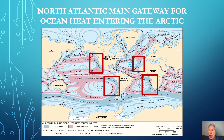Upon reaching the continent's west coast, the now cooler waters are pumped back towards the equator to complete the subtropical gyre's circulation. Of importance to humanity, the currents moving back towards the equator also create the four upwelling regions that support humanity's richest fisheries.